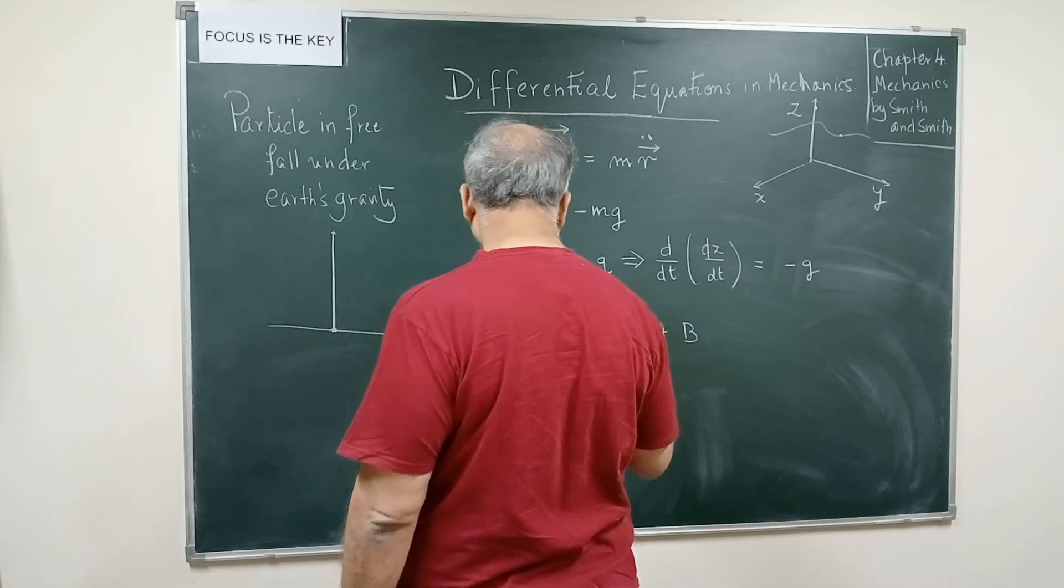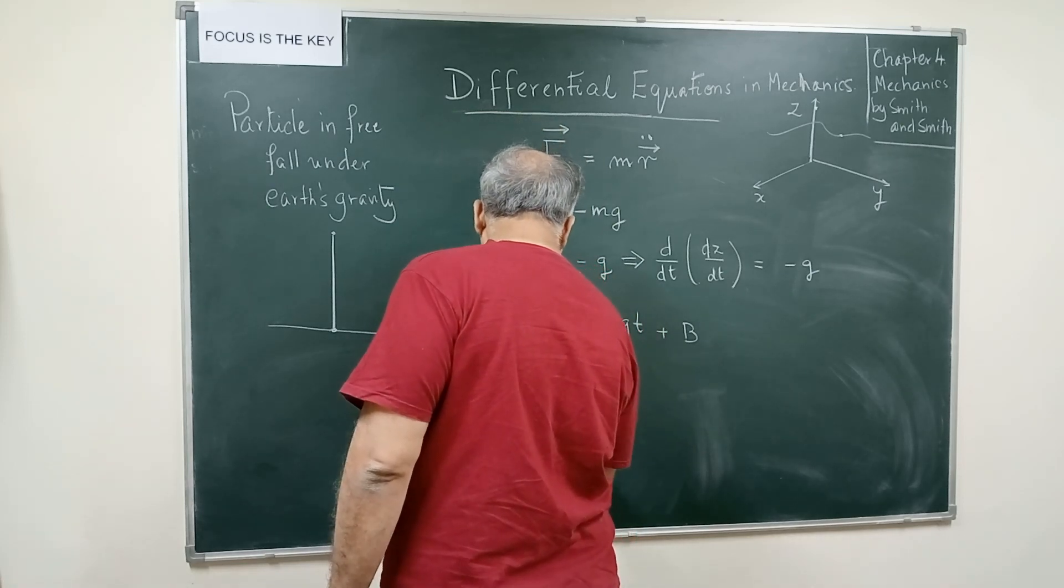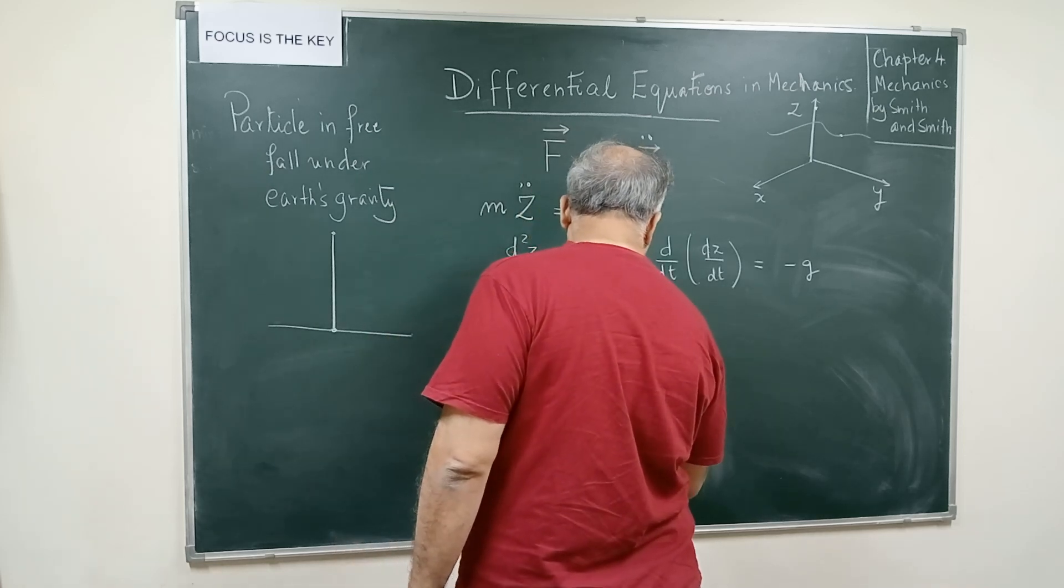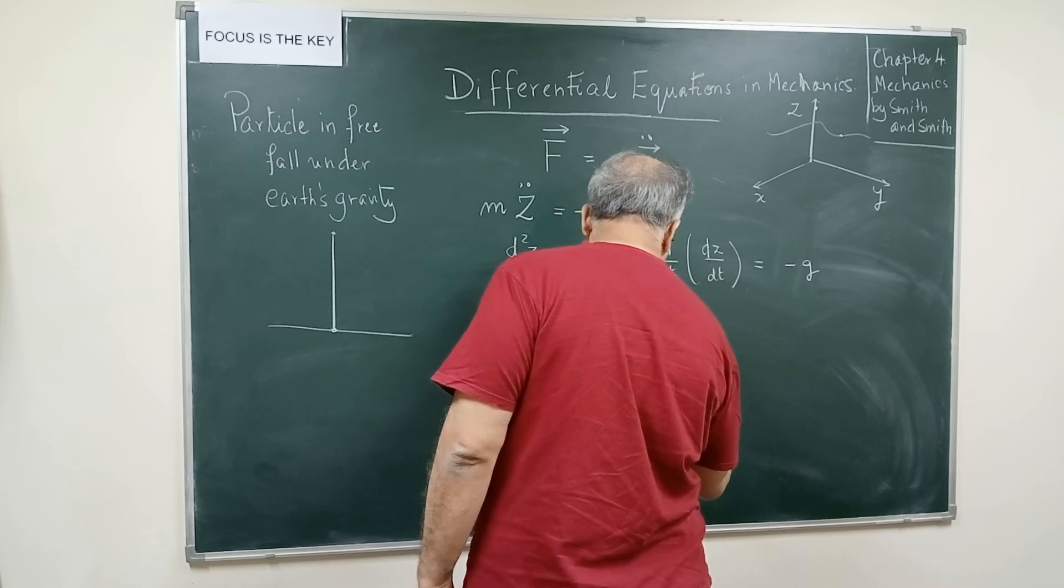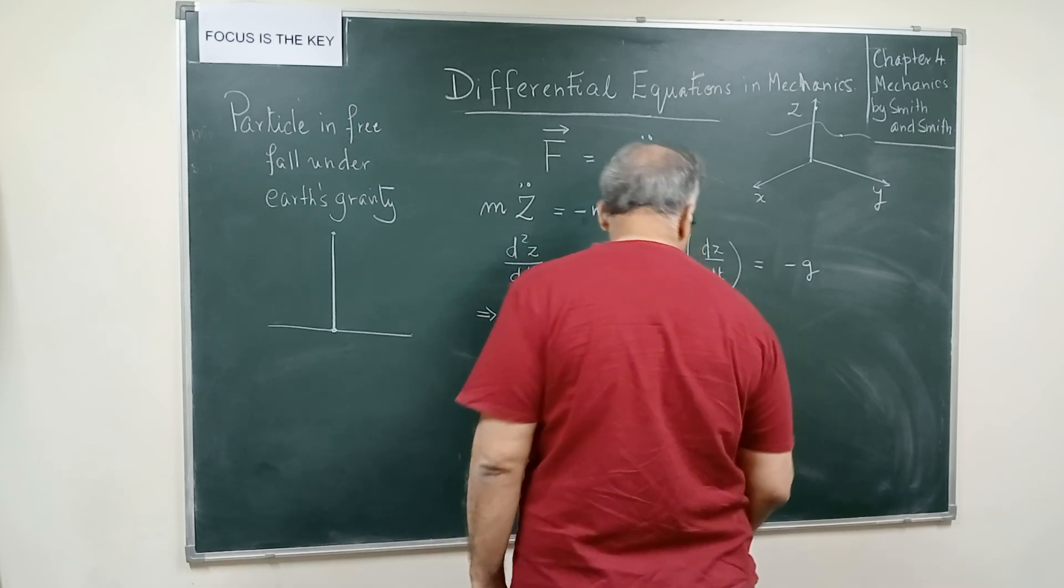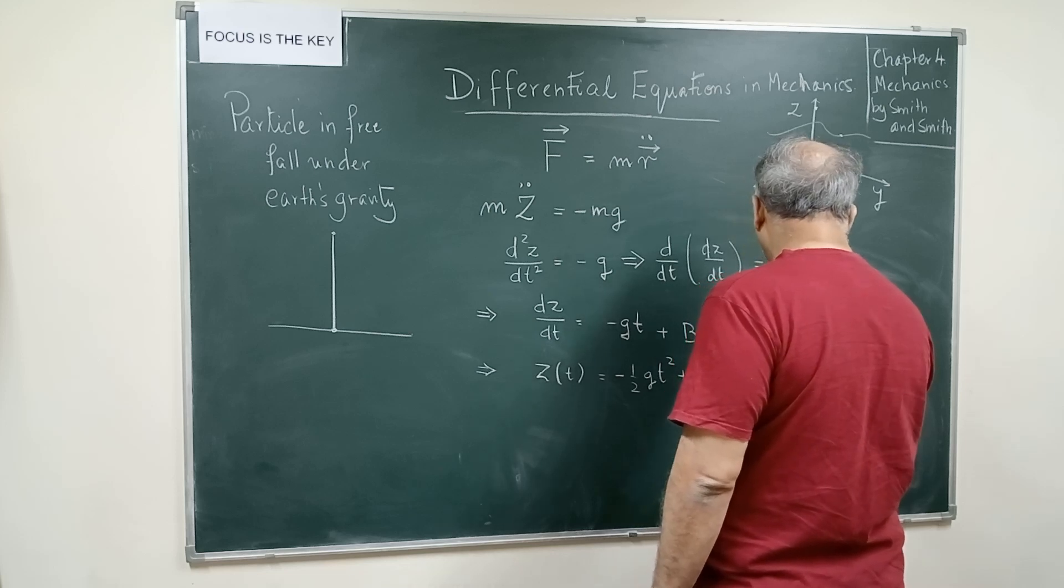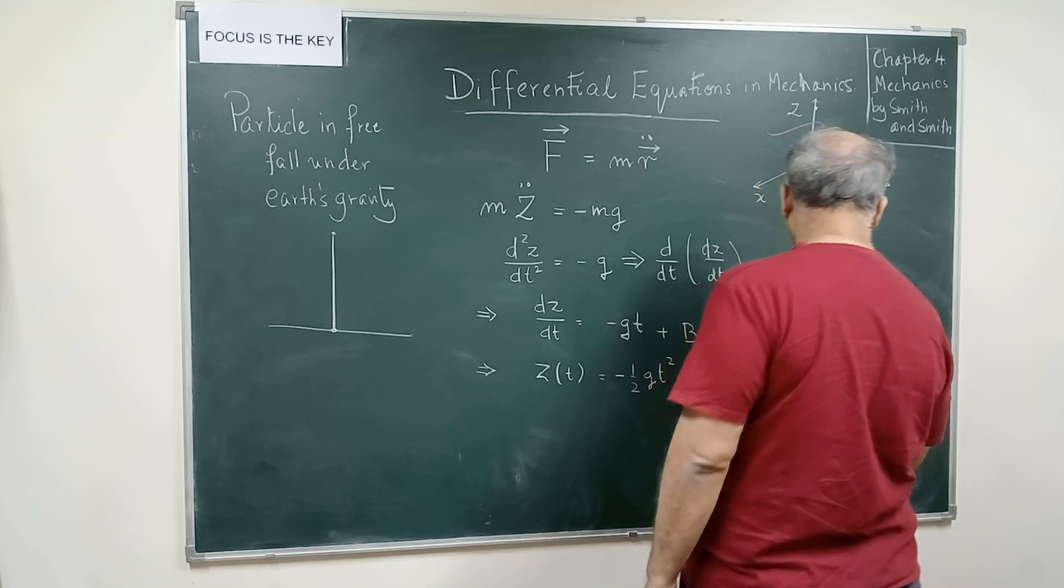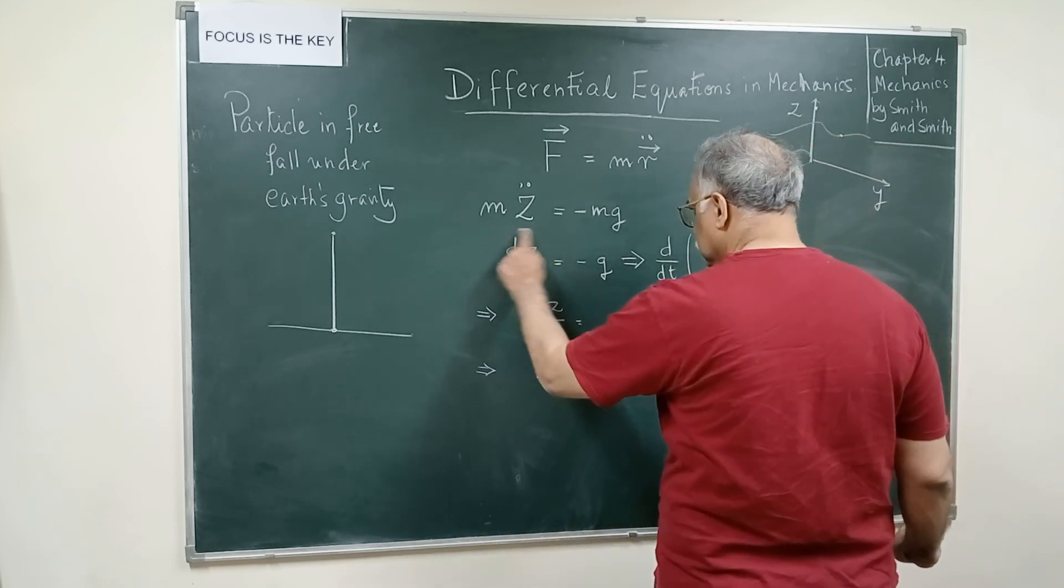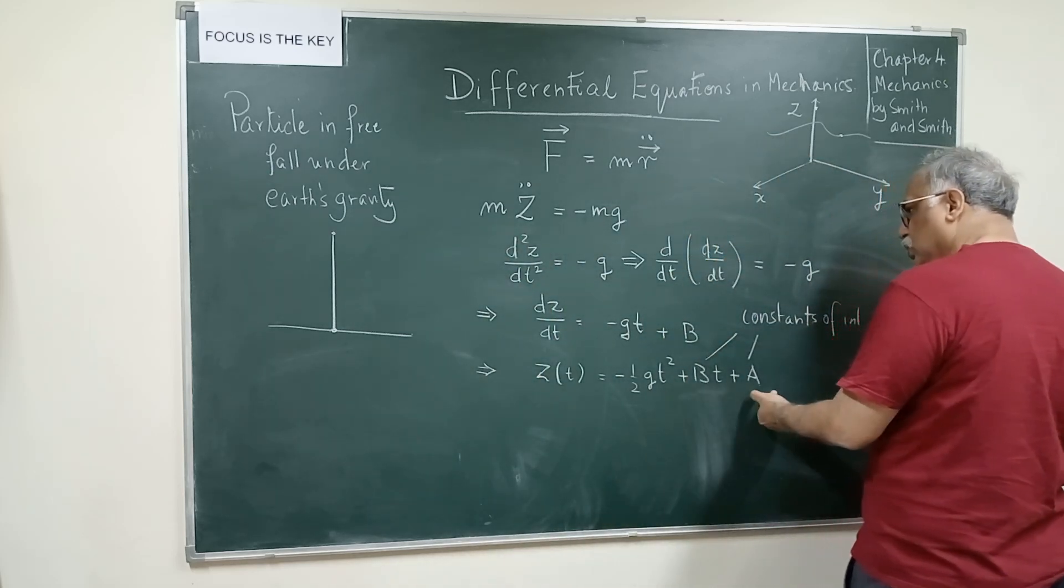Now you have to again integrate this. If you integrate this with respect to t, so you will get z(t) finally as minus half gt² plus bt plus a. So these b and a, these are called the constants of integration which anybody who has done basic calculus knows. These are constants of integration because it is a second order ordinary differential equation with two constants of integration.